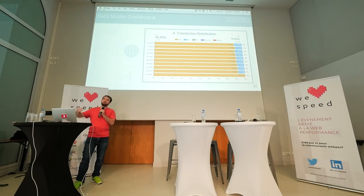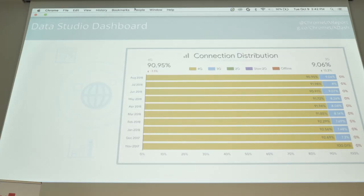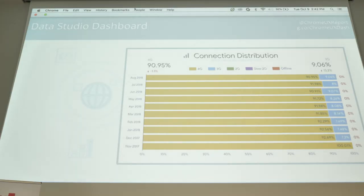I also want to point out that when you're running your synthetic tests, this type of data is still very useful because you can use it to calibrate your synthetic tests. If you're using WebPageTest, the defaults might not represent or be realistic for what your users are actually experiencing. So if I were to set up a synthetic test of this origin, I'd be sure to test it under 4G conditions because that would be more realistic for Chrome users. You'll notice that we also go all the way down to 2G and slow 2G — even offline experiences are counted, but those have very small percentages.